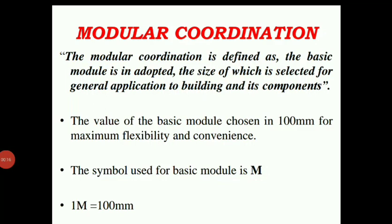Modular coordination is defined as the basic module — the size selected for general application of a building and its components. Modular coordination is essentially measuring the dimensions of structural elements. In the prefabrication system or in buildings, we have different structural elements such as columns, beams, slabs, walls, etc. Each is measured with certain dimensions, and those dimensions are measured using the module system. In conventional buildings, we measure wall dimensions in meters — for example, three meters by six meters — or in square feet. But in the prefabrication system, since most structural elements are similar in design and dimensions, each member is measured with respect to the module system.